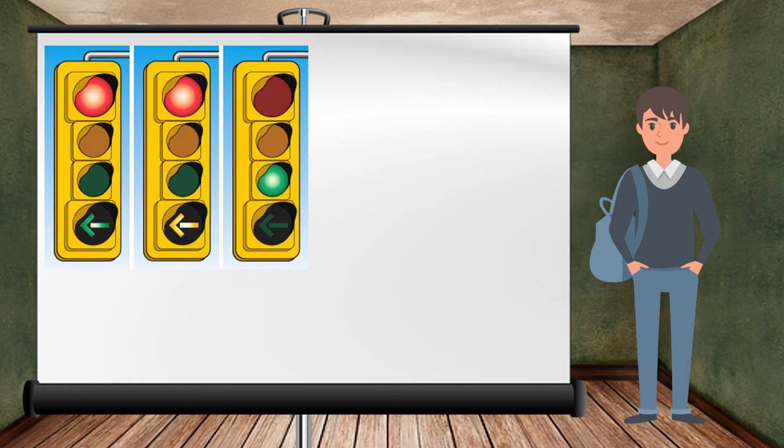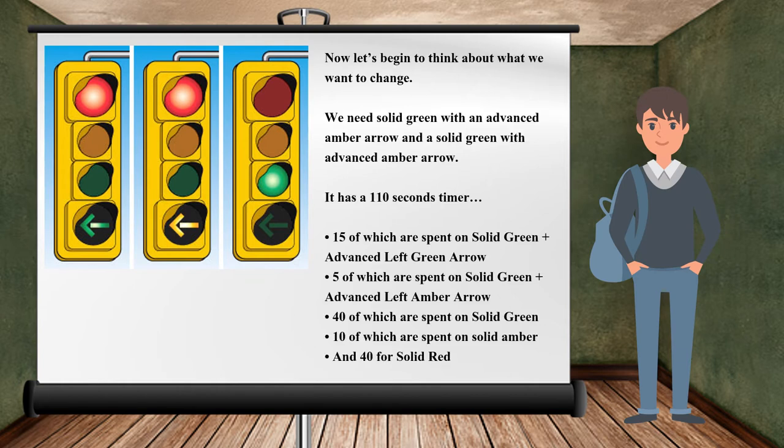The solution we came up with is a 4-light, 5-state system. We want more colors. We need solid green with an advanced green arrow and a solid green with advanced amber arrow. We must stay true to the specifications of the original length of the spotlight's loop.